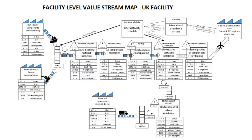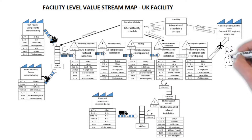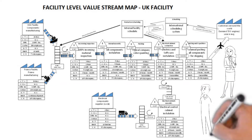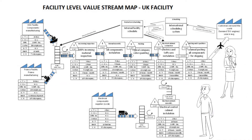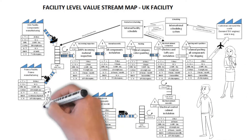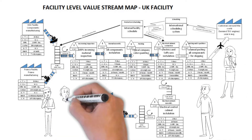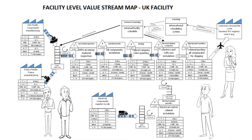A facility value stream map review should be one of the first activities for newcomers. Minimally, all staff should know and understand it very well, but most people are unsure when asked about it. It can be a common communication tool between departments, where most of the friction happens.